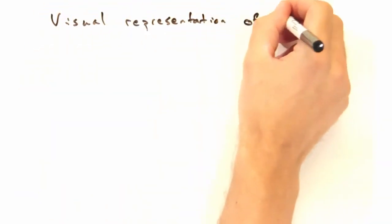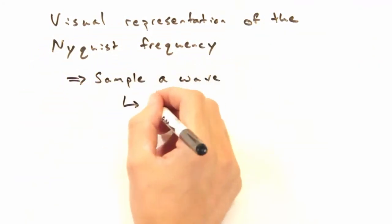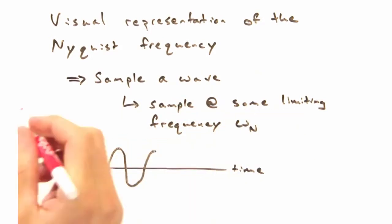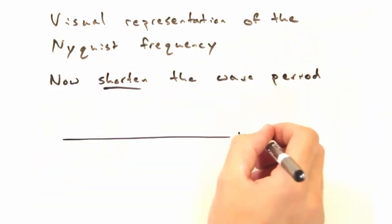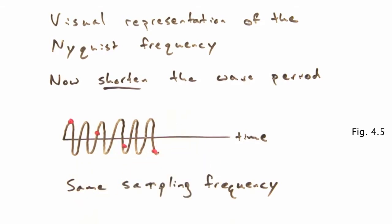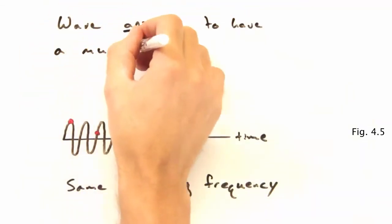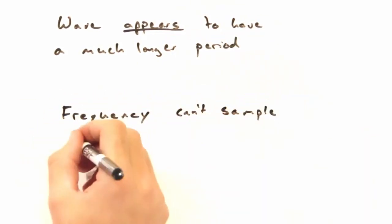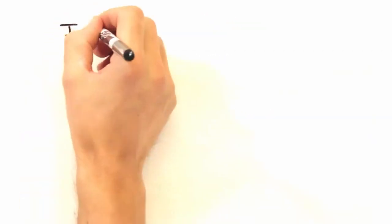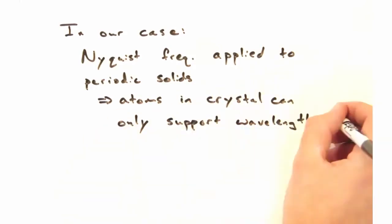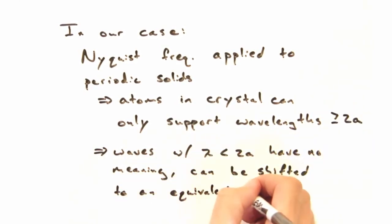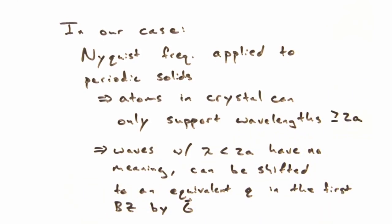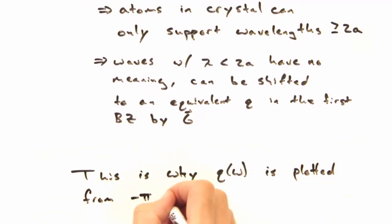So that's how two different wave vectors can give the same physical result. One should think about this as a visual representation of the Nyquist frequency. Think about electronically sampling a wave — at some period you're only going to be able to sample peaks and troughs. What happens as that period gets even shorter? You wouldn't be able to sample as much of the wave and would probably not get the correct information on it. The frequency that you can't sample above, because you'd get something wrong, is the Nyquist frequency. So in our case, the atoms in our crystal can only support waves with wavelengths as short as 2a. Anything less than that has no physical meaning, but can be shifted into an equivalent q vector in the first Brillouin zone, where it does have meaning. And so that's why dispersions are only plotted from q equals minus pi over a to pi over a.